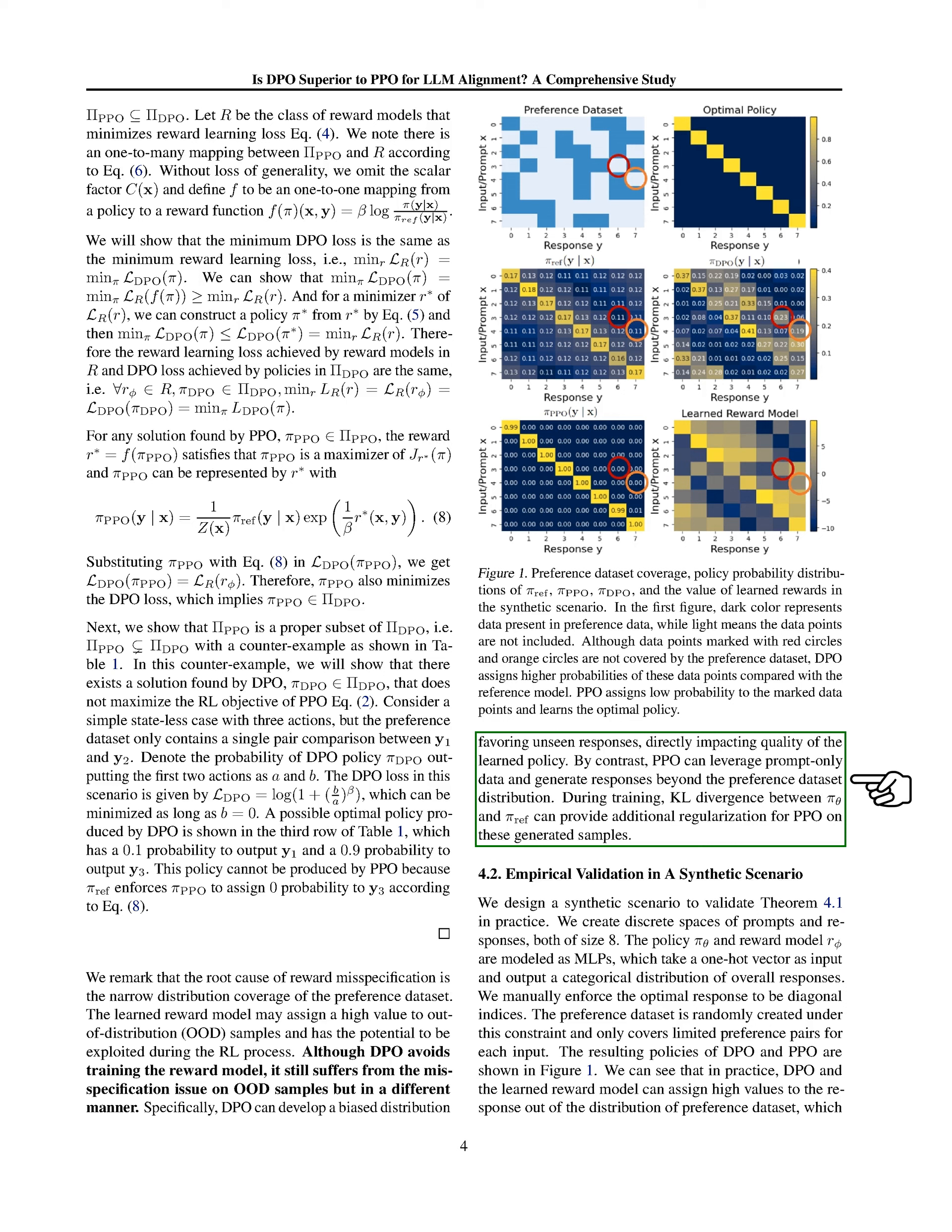In contrast, PPO can use prompt-only data to generate responses beyond the preference dataset distribution. The KL divergence between distributions can provide additional regularization for PPO on these generated samples during training.